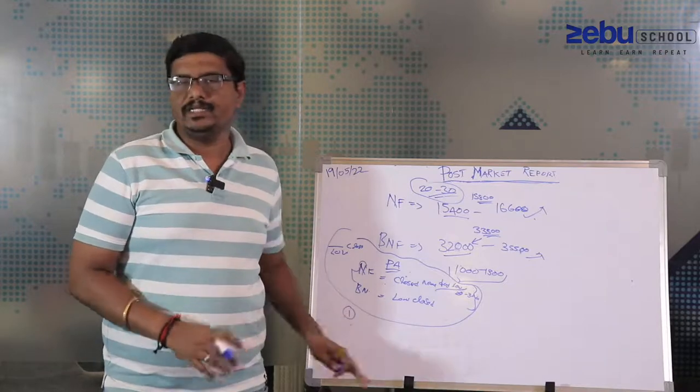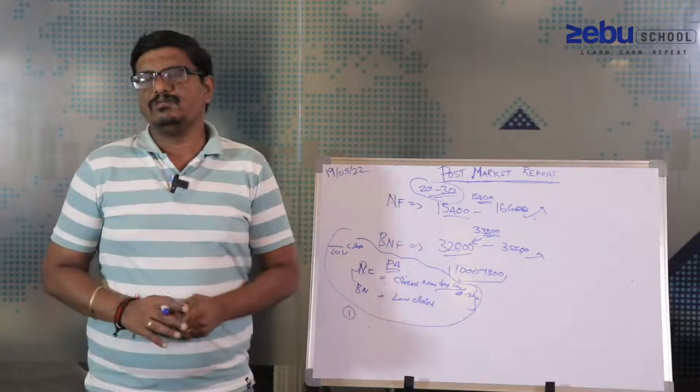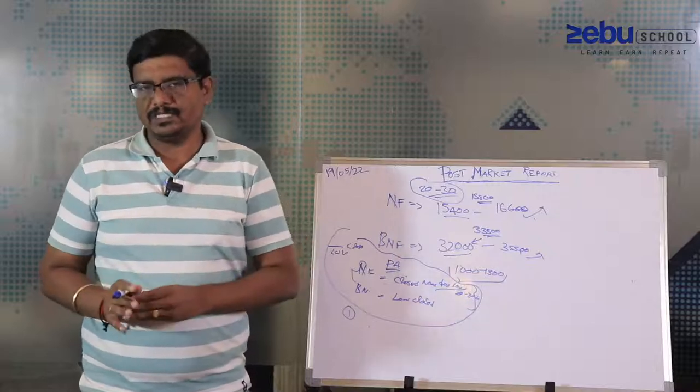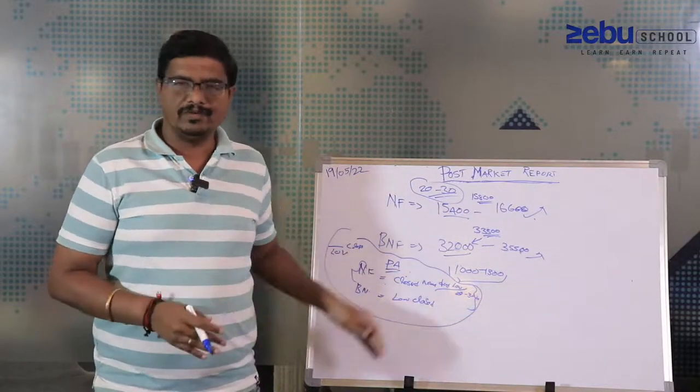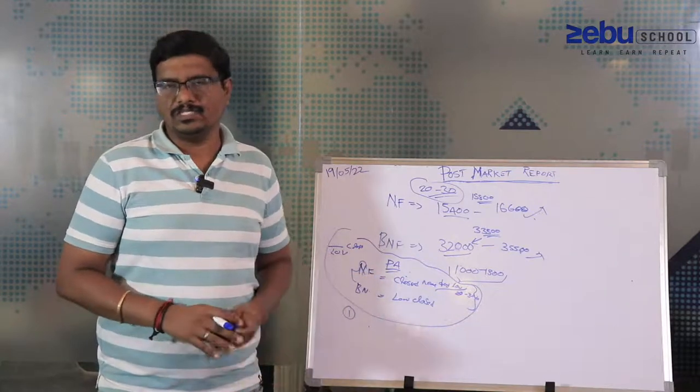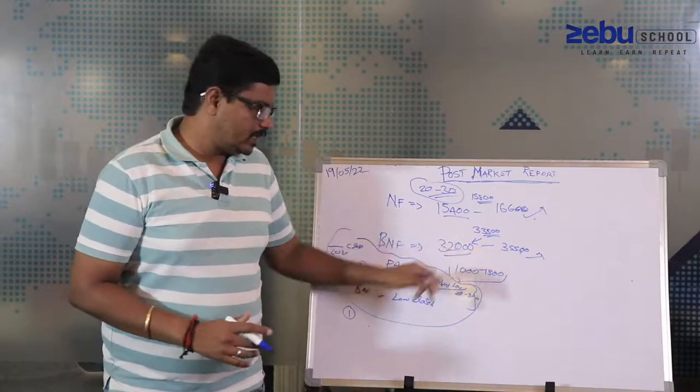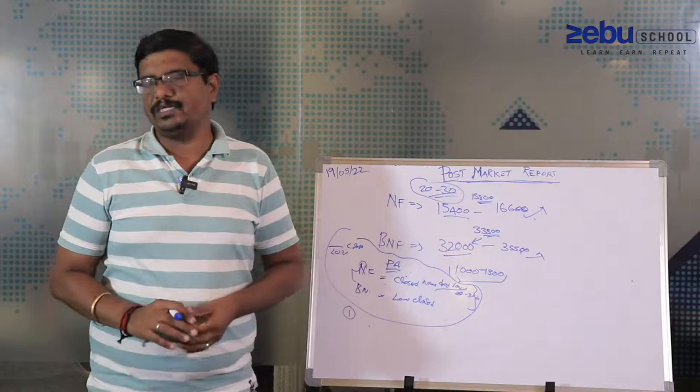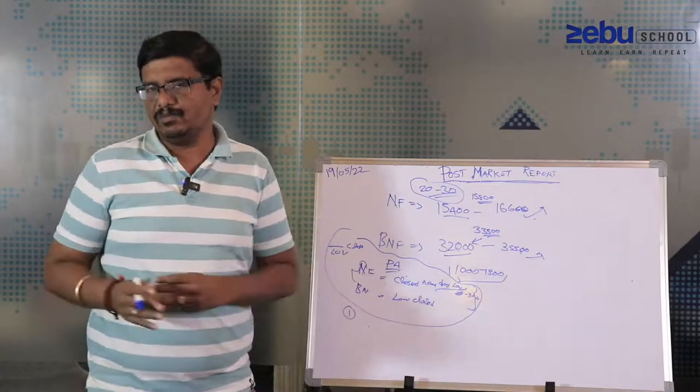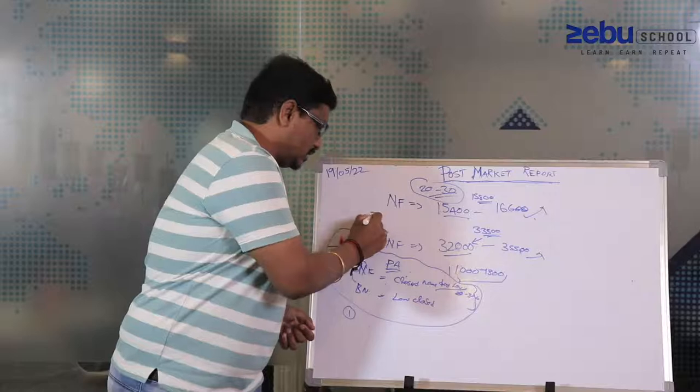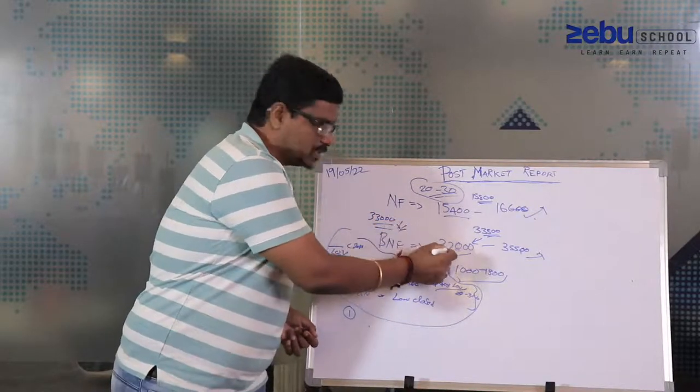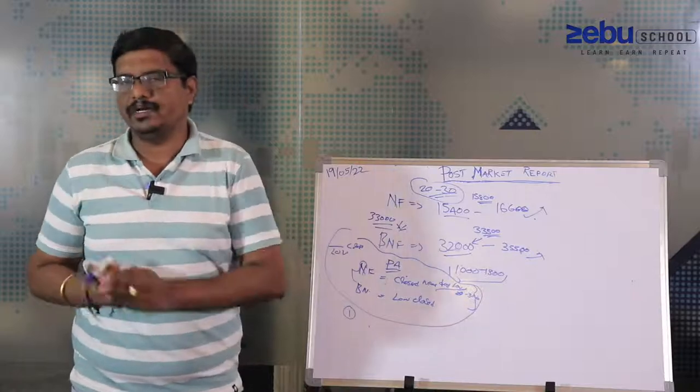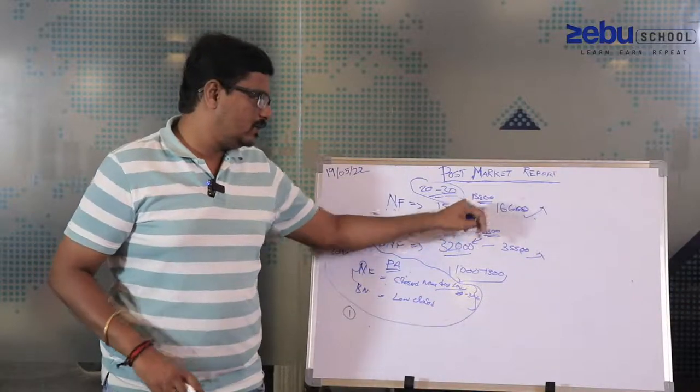I do not expect a huge target even if it's going to gap down. The levels are 32,000 to 32,500 is the key level, that's a long-term level. The recent swings were somewhere around 33,033. Even if this breaks, I expect 32,000 to 32,500 to hold on Bank Nifty.